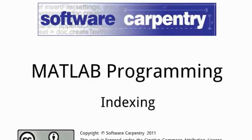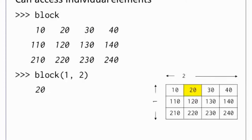Hello, and welcome to another episode of the Software Carpentry Lecture on MATLAB. In this episode, we'll have a look at some of the ways you can index arrays. As we'll see, clever indexing allows you to avoid writing loops, which both reduces the size of your code and makes your code more efficient. Individual elements in an array can be accessed using a comma-separated list of integer indices. In most programming languages, the first element of an array is element 0. In MATLAB, indexes start at 1.